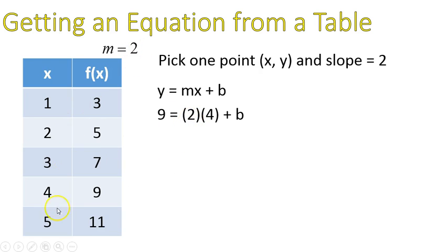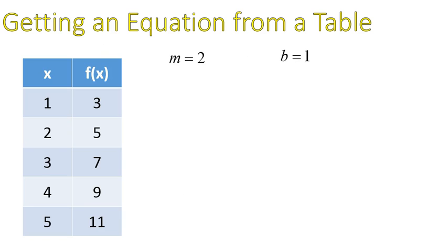We calculated that in the last question. Now you can pick any of these points, and it will work exactly the same way. You can try it out. 2 times 4 is 8. I subtract 8 from both sides of this equation, leaving me with b is equal to 1. 8 plus 1 is 9. That makes sense. So now I have two pieces of information. I know that my slope is equal to 2 and my b value is equal to 1.